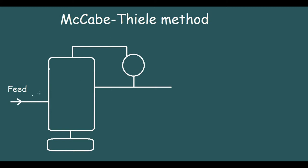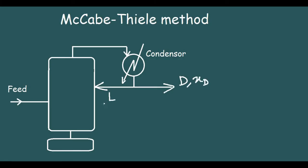This is known as the condenser. A part of this top product is recycled inside the distillation column and a part goes out. The part which goes out is named D, and the part which goes in is named L. The composition of D is XD, and L also has composition XD because these are parts from the same stream.